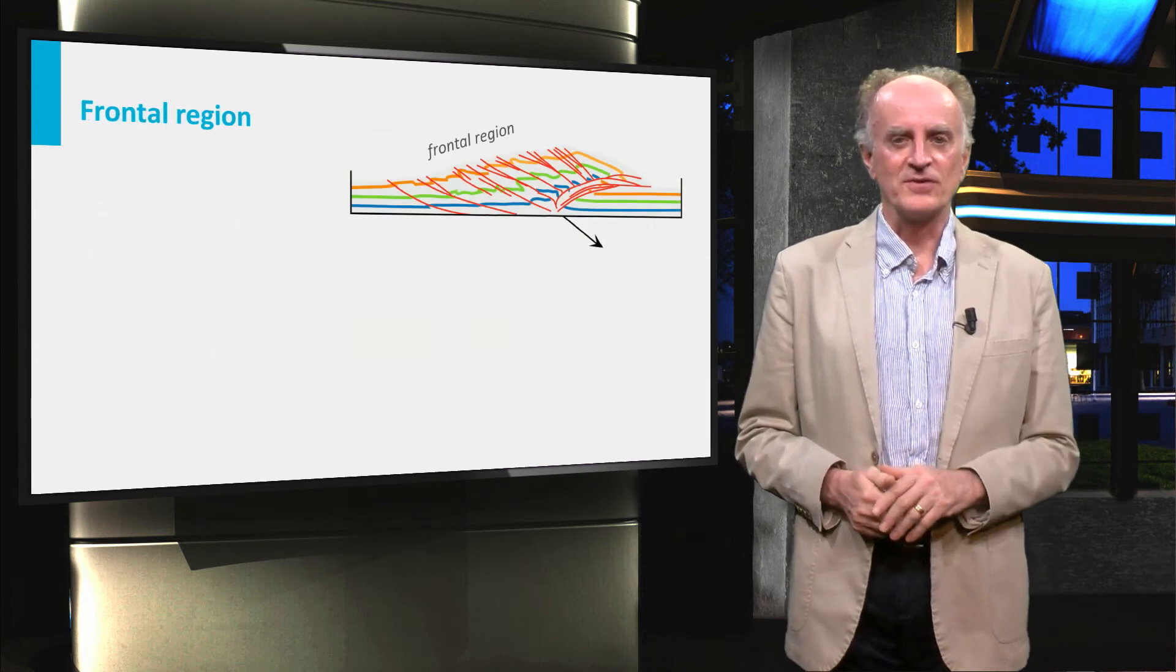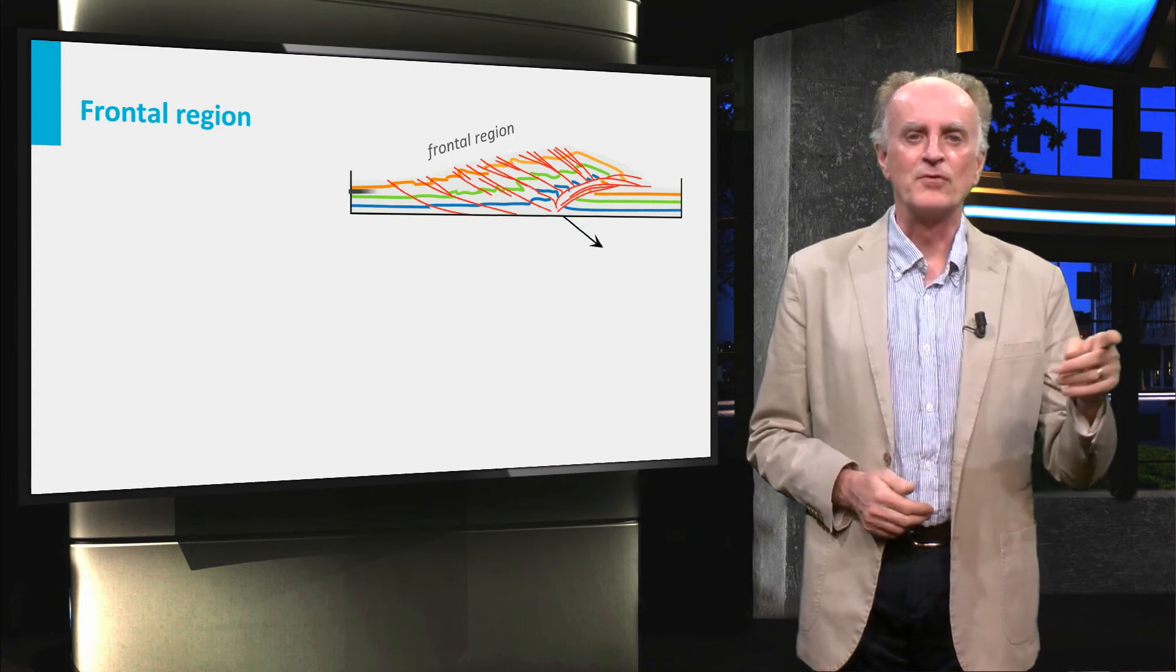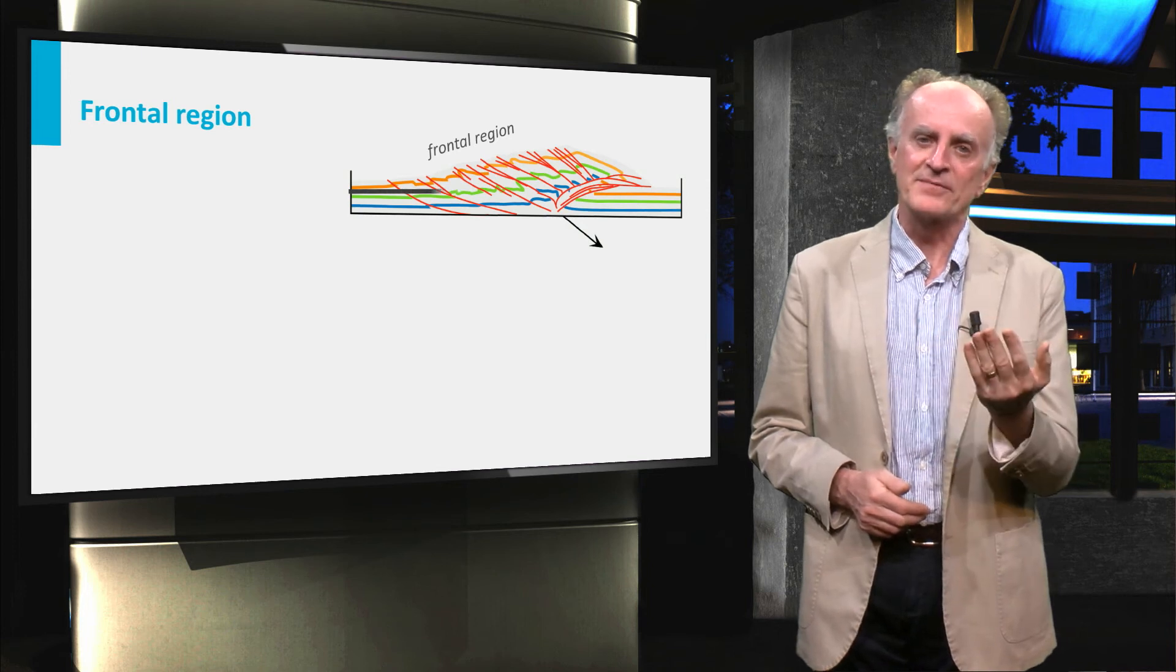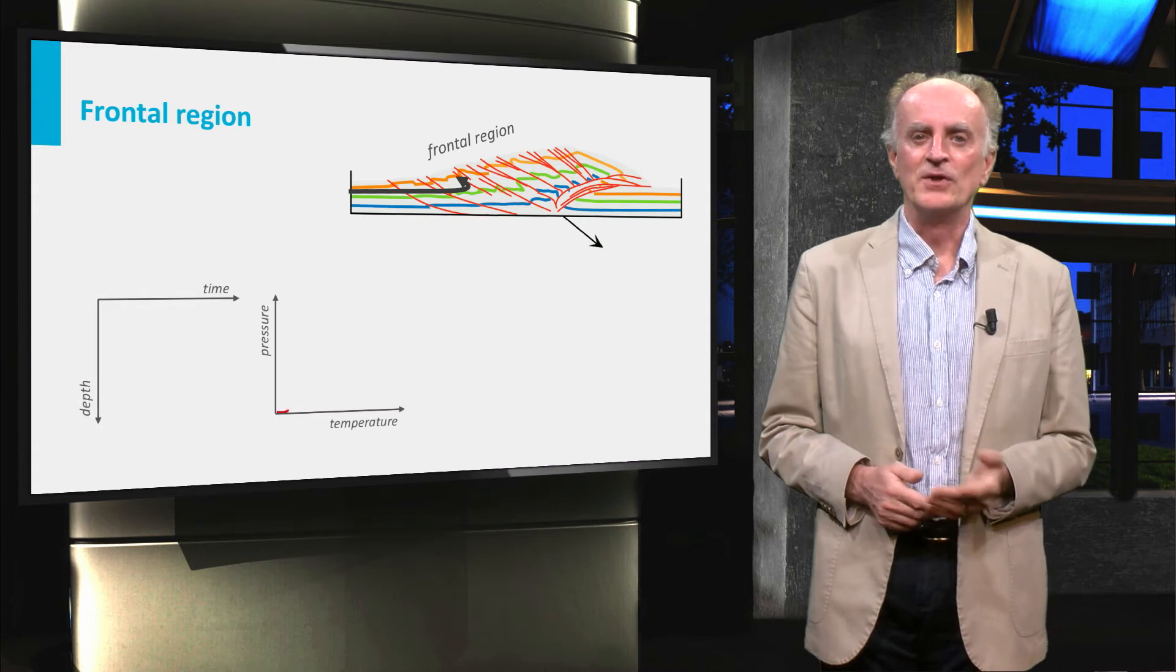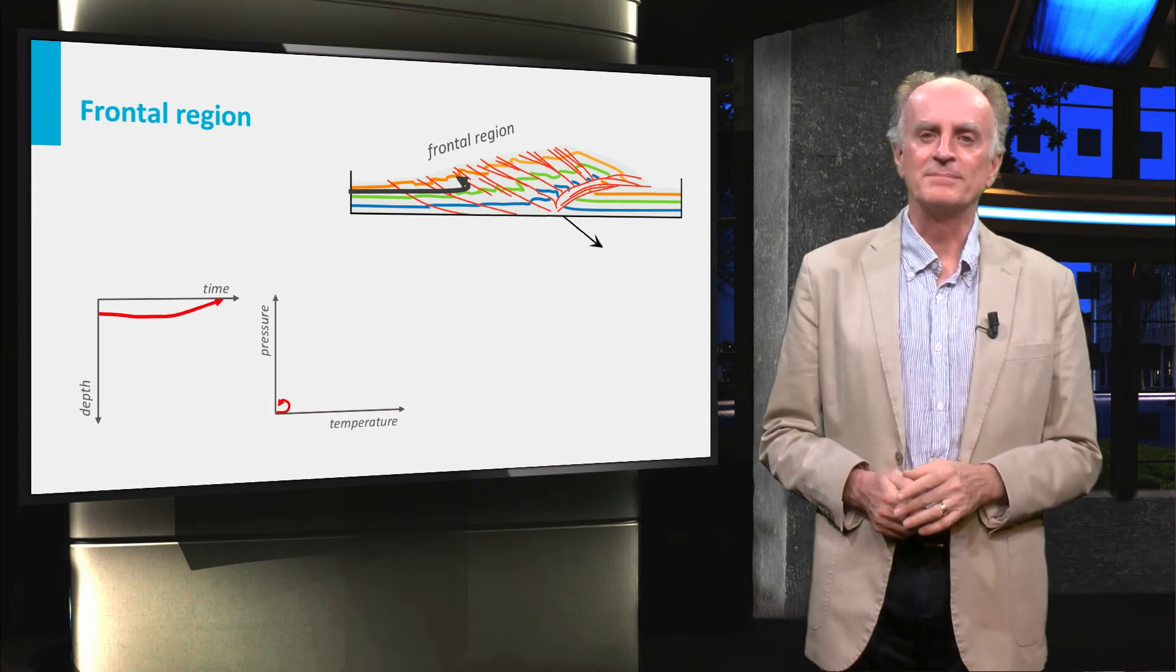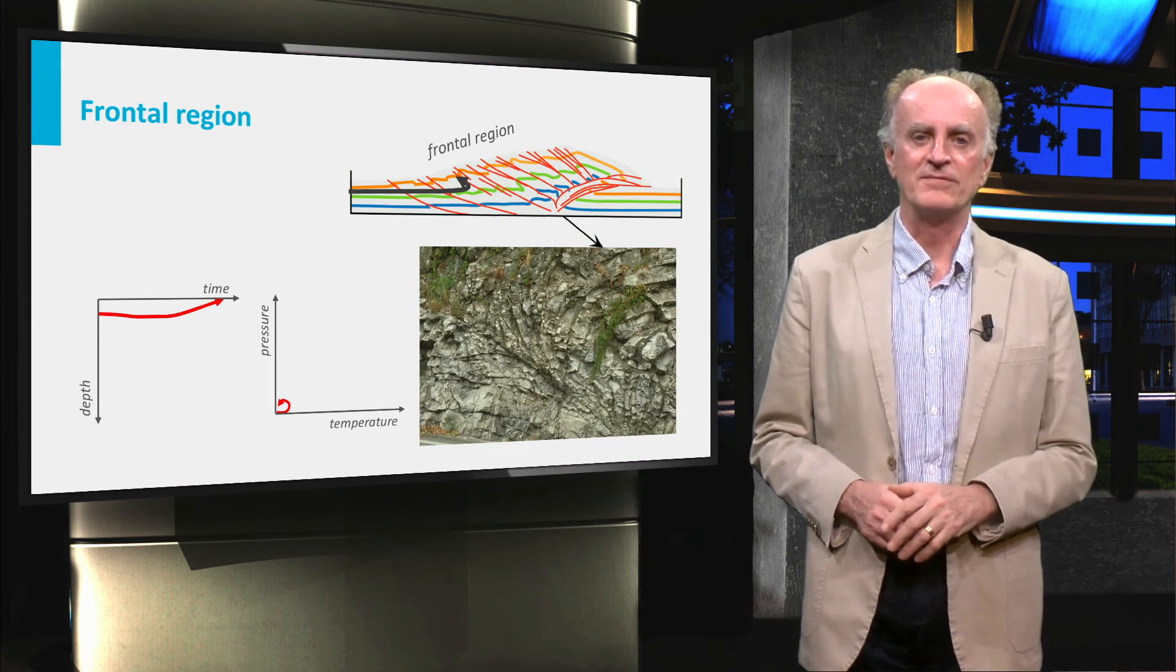Rocks ending up in the frontal regions will never be buried at large depths. They will be deformed when they enter in the collision zone, picked up by a thrust and moved back to the surface. As a result they will not experience high pressures and temperatures and will be broken in a fully fragile manner with discrete faults and folds.